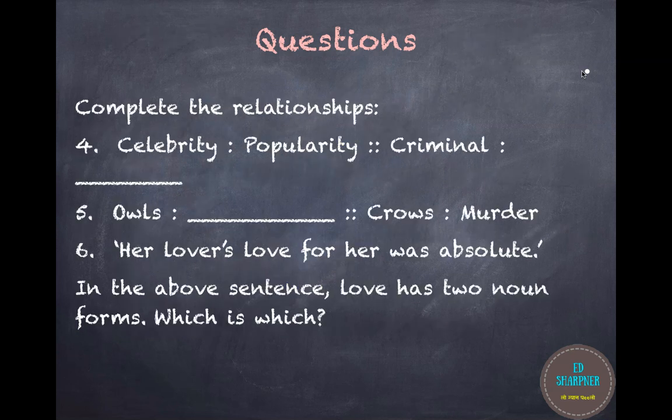Coming to the next question, we have to complete the relationships. The question is: celebrity is to popularity as criminal is to what? A celebrity is popular — a person who is popular for good things is called a celebrity. The opposite of celebrity is criminal — someone who is famous for bad things is called notorious. Hence the opposite of popularity is notoriety, which is again a noun.